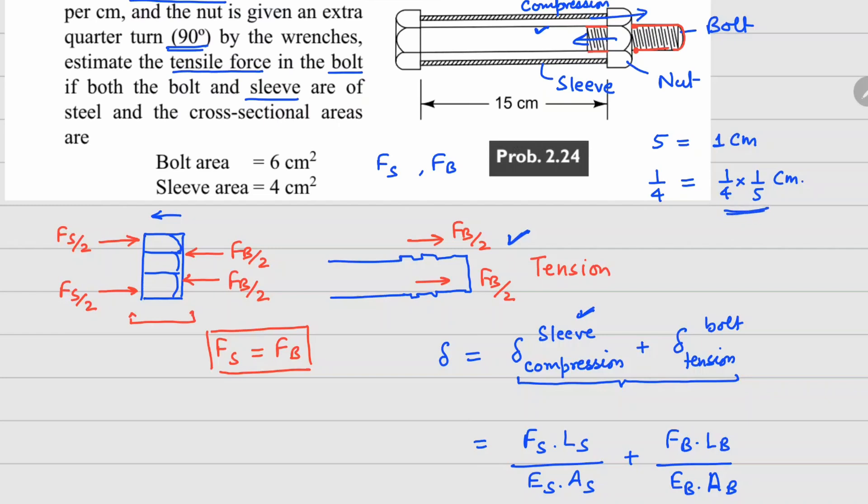Since the net deformation is 1/20 centimeter, I can move it to this side. Both lengths for the bolt and the sleeve are 15 centimeters, and both are made of steel, so their elastic modulus is going to be 205 gigapascals. From the earlier equation we already know that Fs equals Fb.